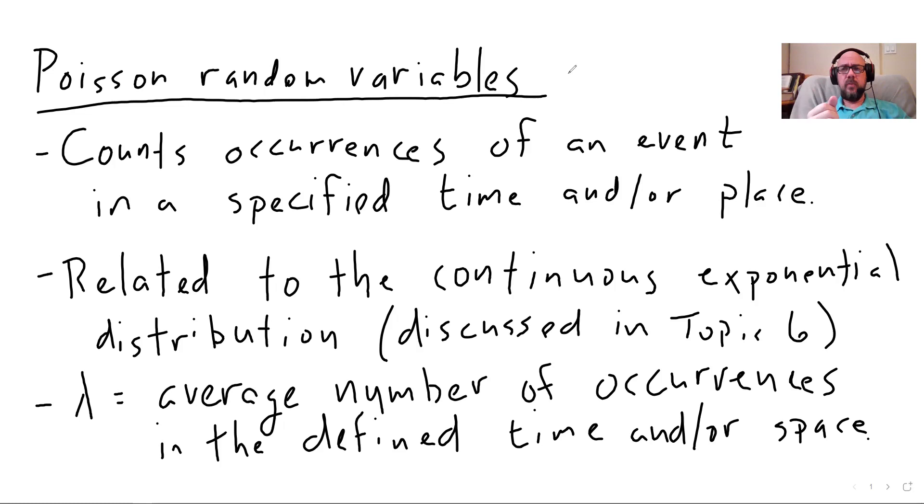But basically it's very vague. It's extremely vague. It's hard to tell when you would use a Poisson distribution, as you can tell by the fact that it took 50 years after Poisson died for anybody to use it. But what it does is it counts occurrences of a specific event in a specified time and/or place, which you might notice is very general. There are a lot of things, a lot of events that occur in a defined time and/or place.